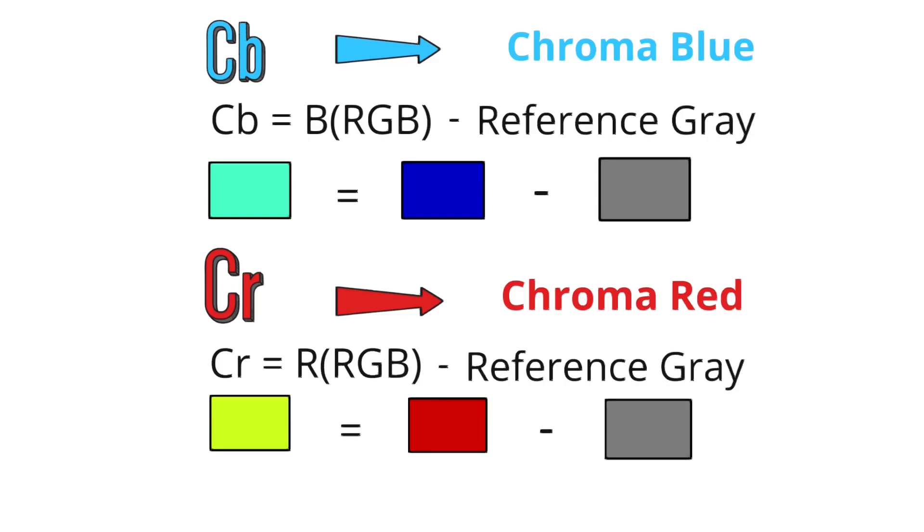The reference value acts as a neutral or zero point. When the color in the image is exactly the same as this neutral gray, CB and CR values are at zero, indicating no excess of blue or red. As the color deviates towards blue or red, the CB and CR values change accordingly, indicating the strength and direction of that deviation.